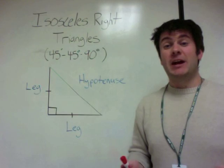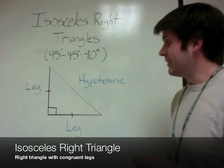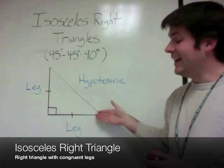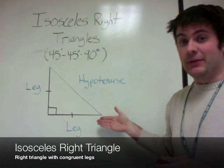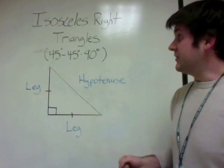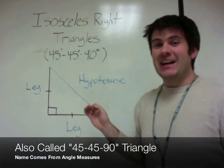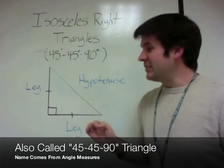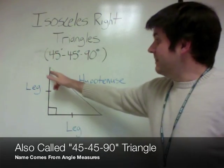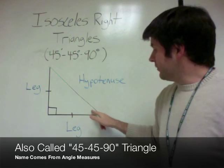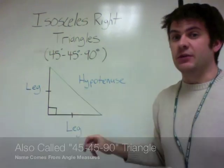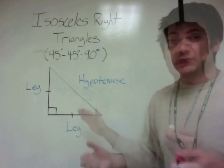What you're looking at right now is an example of an isosceles right triangle. It's a right triangle with two legs of the same length — that's what makes it an isosceles right triangle. It's also known as a 45-45-90 triangle. These two angles are each 45 degrees, and this angle is 90 degrees, so it's named after its angle measures.